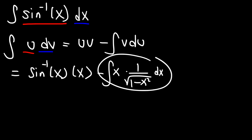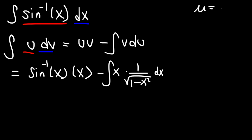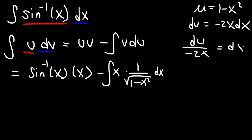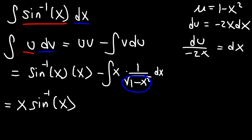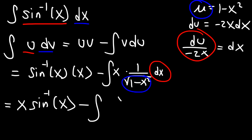We need to use u-substitution for that integral. We're going to make u equal to 1 minus x squared, so du is going to be negative 2x dx. Dividing both sides by negative 2x, we replace 1 minus x squared with u and replace dx with du over negative 2x. This gives us x arc sine of x minus the integral of x divided by the square root of u, times du over negative 2x.